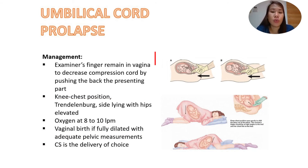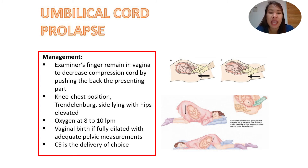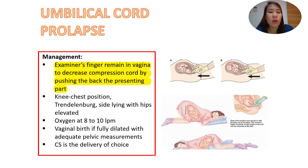So what is the management? When we assess that there is an umbilical cord prolapse — as a doctor, nurse, or midwife — the examiner's finger will remain in the vagina to decrease compression by pushing back the presenting part. Remember, what we push back is the presenting part, not the umbilical cord itself.